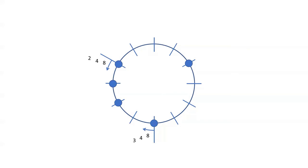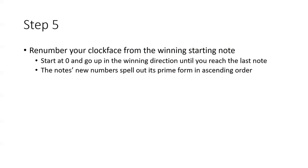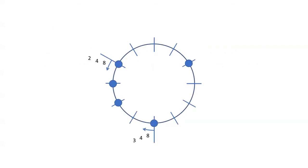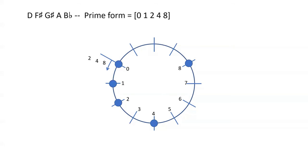Since we have two fours, we'll still have a tie in step 4, where we look at the anti-penultimate pitch class. First we'll remove the six and seven arrows. Now measuring from first to third-from-last for each of the fours — one of them is a three, and the other is a two. So we've broken the tie. Renumbering the clock starting at the winning place with zero and going in the direction of the winning arrow, the prime form is 0, 1, 2, 4, 8.